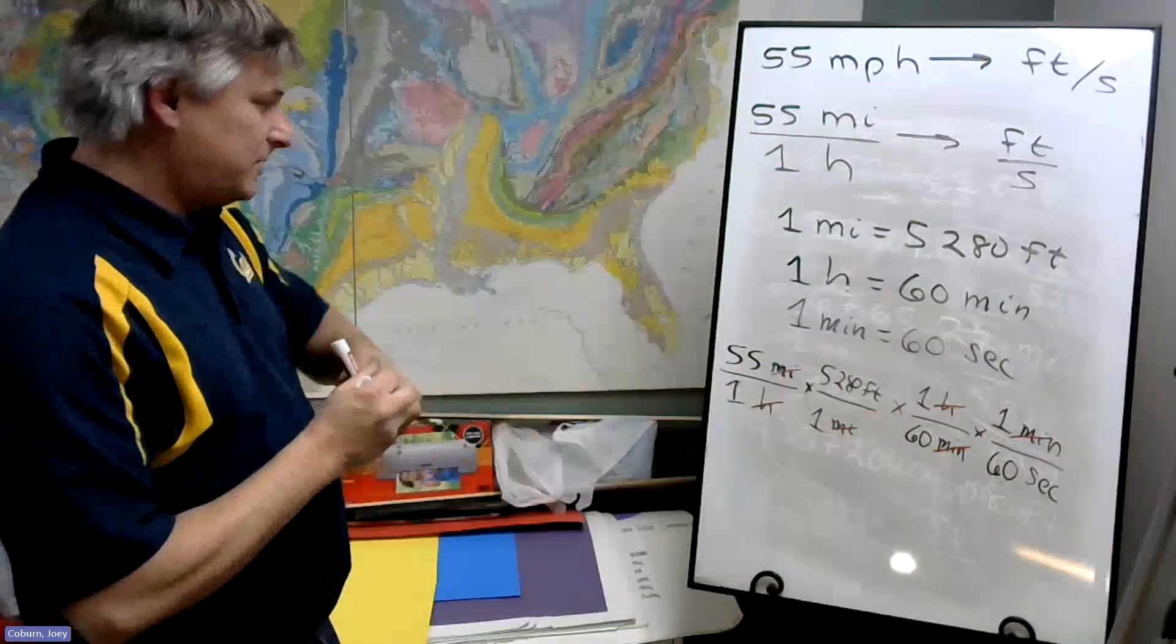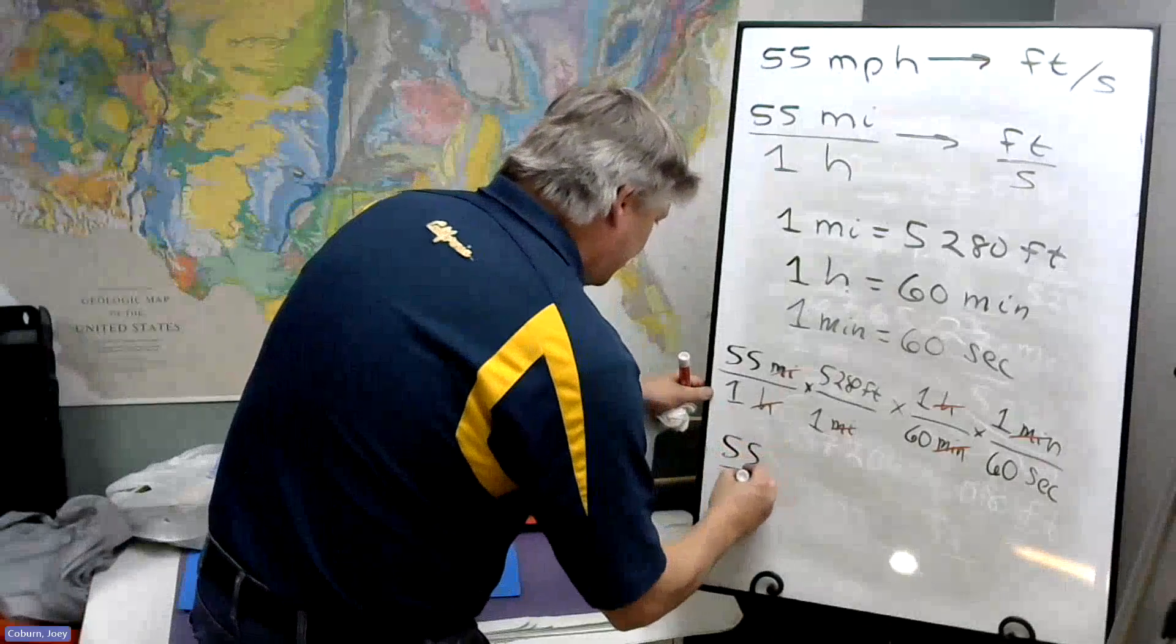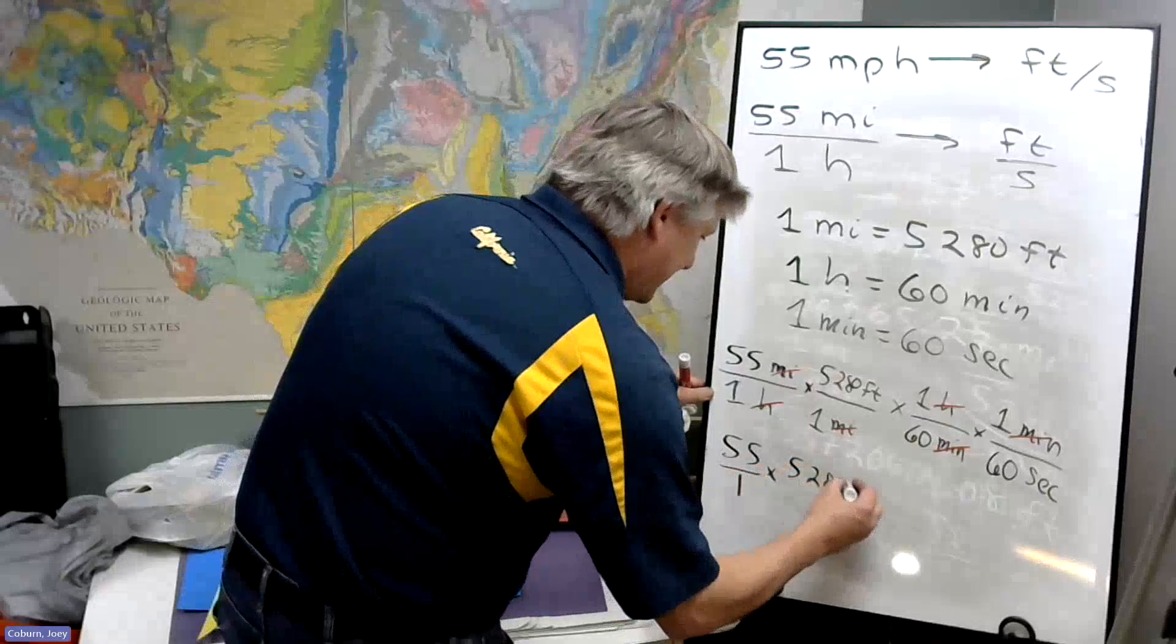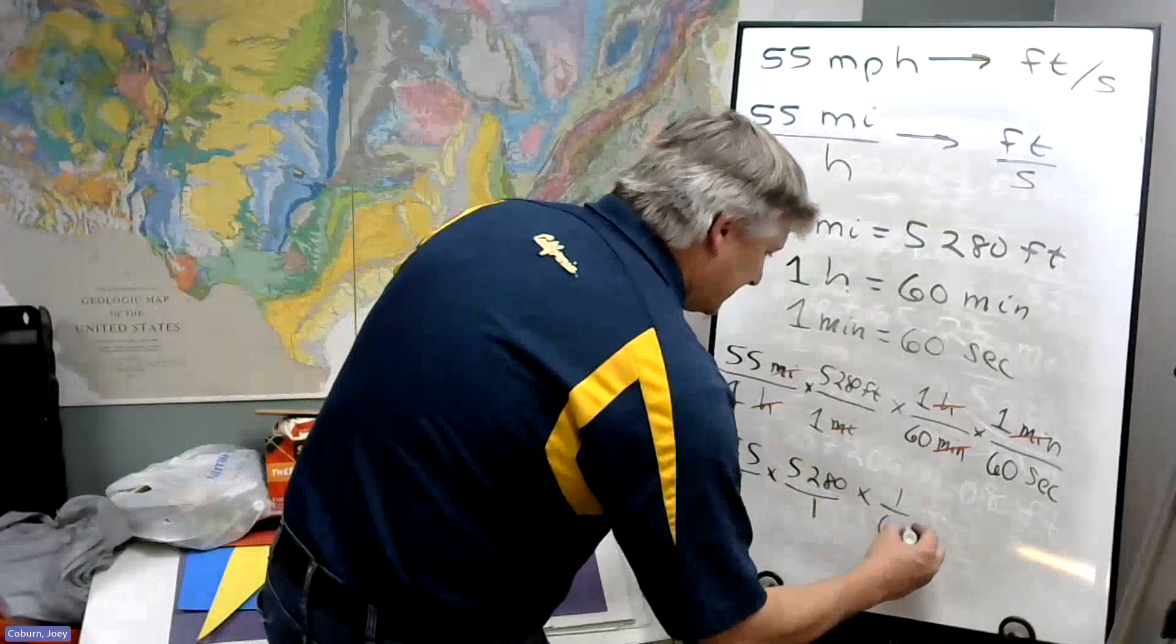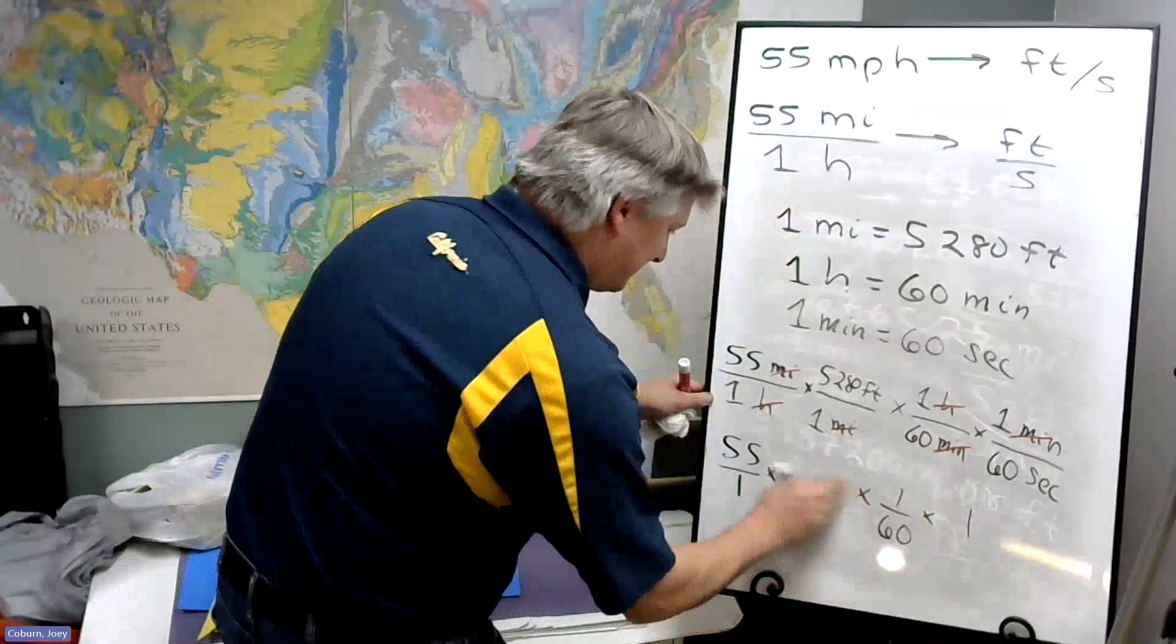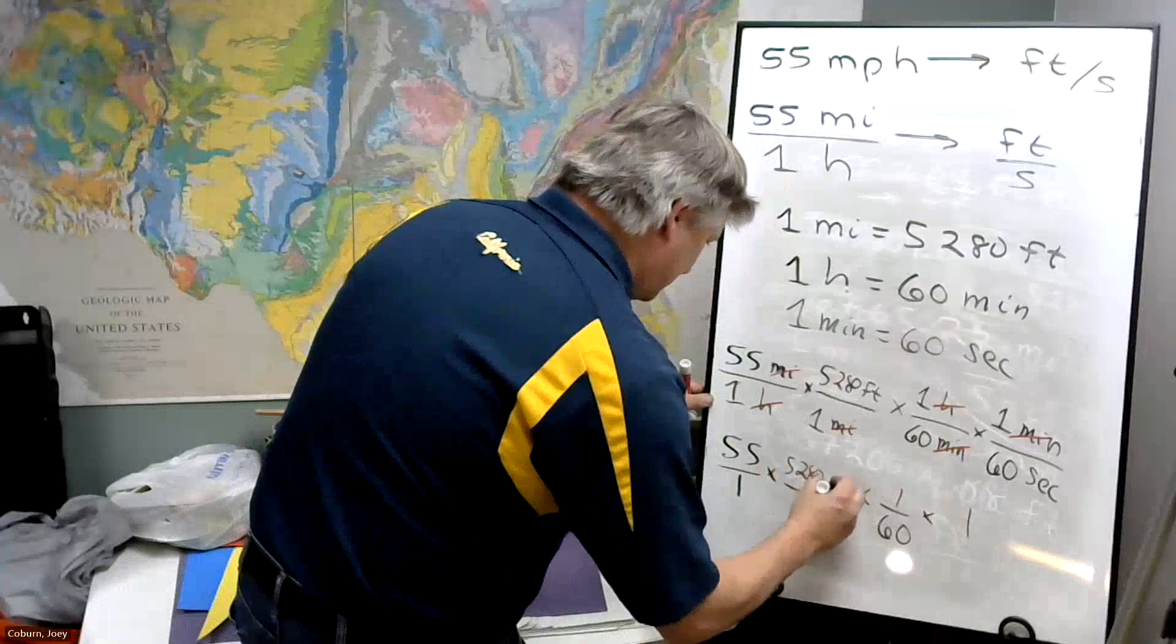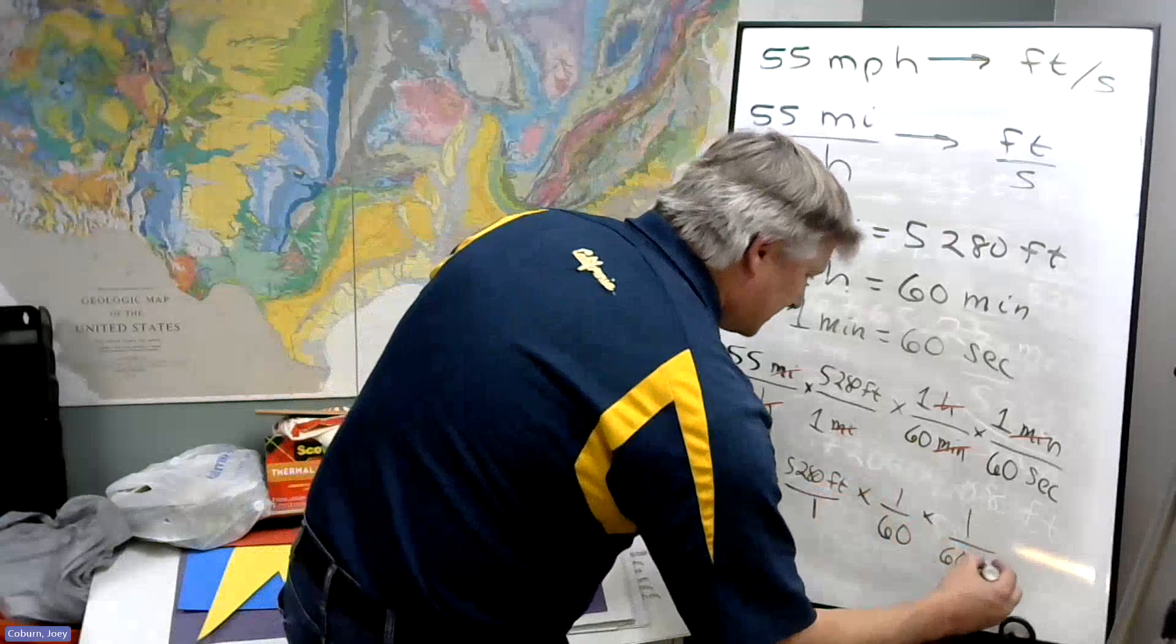So what do we have? Well, once we clean up all the cancellations, 55 over 1 times 5,280 over 1 times 1 over 60 times 1. And this is going to be 60 - this is feet actually, let me back up.